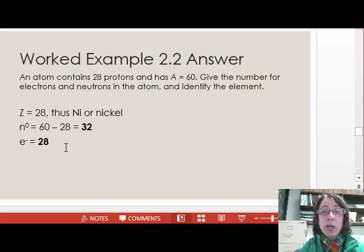To calculate the number of neutrons, we subtract the number of protons, 28, from the mass number of 60, symbolized by capital A, to obtain 32.